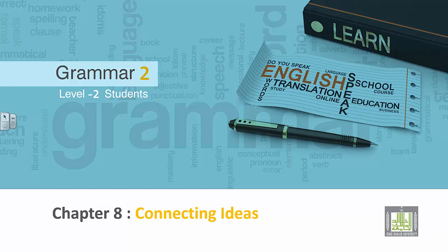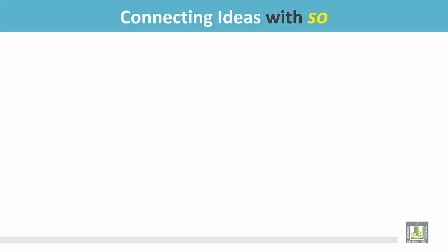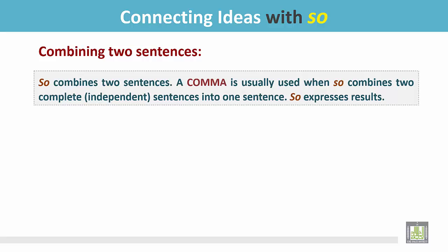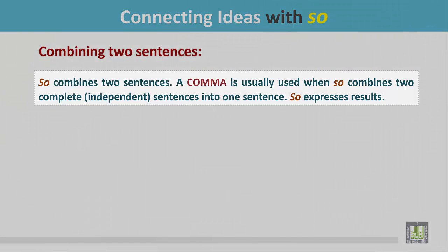Grammar 2 for level 2 students, chapter 8: connecting ideas. Connecting ideas with 'so' — combining two sentences. 'So' combines sentences, and a comma is usually used when 'so' combines two complete independent sentences into one sentence. 'So' expresses results.